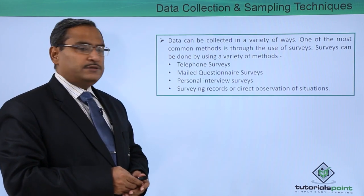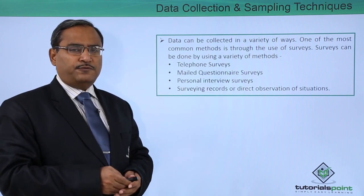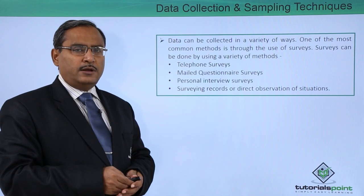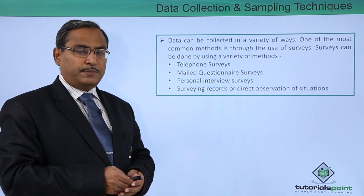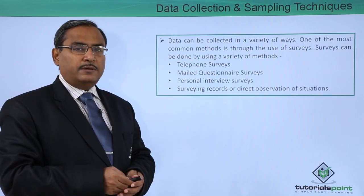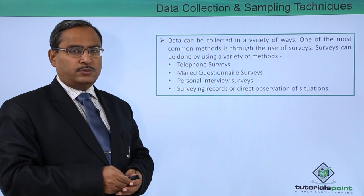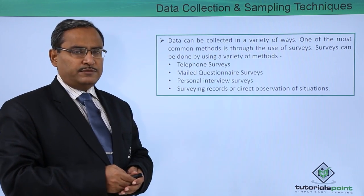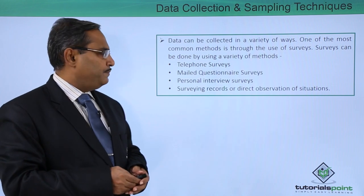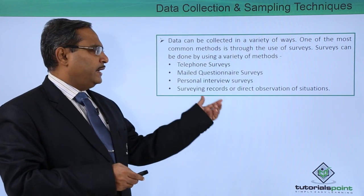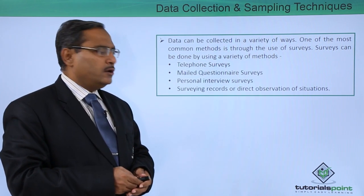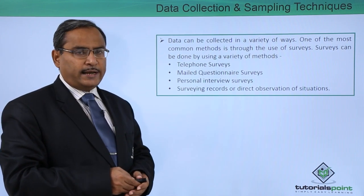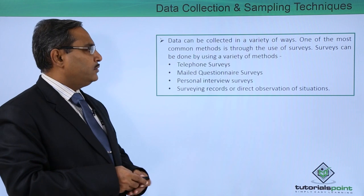Personal interview surveys — in this case it is very much fruitful because you can do the survey by personally meeting with the person. But in some cases the interviewer might remain biased in the questionnaire set, so personal interview surveys may have some other flaws. Surveying records or direct observation of the situation is another way in which data can be collected through this survey method.